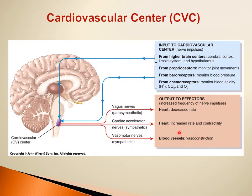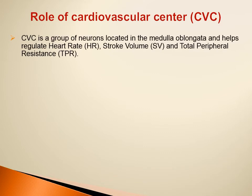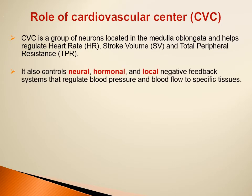The sympathetic nervous system will increase the heart rate, increase the stroke volume, and cause vasoconstriction — all of these will increase the mean arterial pressure. The cardiovascular center is a group of neurons located in the medulla oblongata that helps regulate heart rate, stroke volume, and total peripheral resistance. It also controls neural, hormonal, and local negative feedback systems that regulate blood pressure and blood flow to specific tissues.